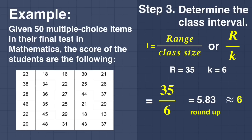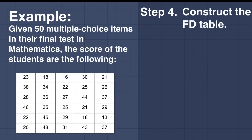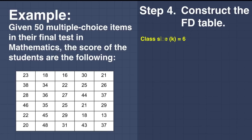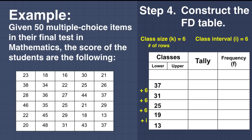For step number 4, construct the Frequency Distribution Table. Since we solved the class size K equal to 6, it signifies the number of rows. To complete the table, get the lowest value which is 13. Then for each row, add the interval of 6. So: 13 plus 6 is 19; 19 plus 6 is 25; 25 plus 6 is 31; 31 plus 6 is 37; and 37 plus 6 gives the last value of 43.